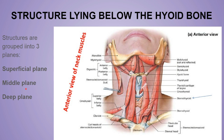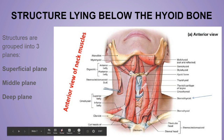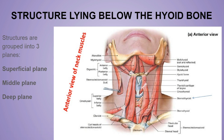In the middle plane there are two main structures: the pretracheal fascia of the deep cervical fascia and the thyroid gland. The pretracheal fascia forms the false capsule of the thyroid gland and the suspensory ligament of Berry, which connects the thyroid gland to the cricoid cartilage. Because of this attachment, the thyroid gland moves upward during swallowing.